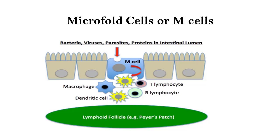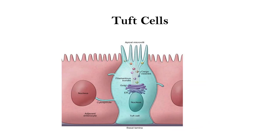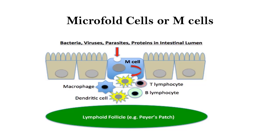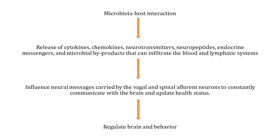Tuft cells initiate T helper type 2 immune response to parasites including both intestinal helminths and protozoa. Goblet cells secrete the mucus layer that protects the epithelium from the luminal contents, so the epithelium is not exposed to pathogenic microorganisms — it's like a protective layer for the epithelium. M cells recognize self and non-self antigens and present non-self antigens to the immune system where these pathogens are killed. Moreover, microbiota and host interaction at the level of the gut leads to release of cytokines, chemokines, neurotransmitters, neuropeptides and many endocrine messengers and microbial by-products that can infiltrate the blood and lymphatic systems.